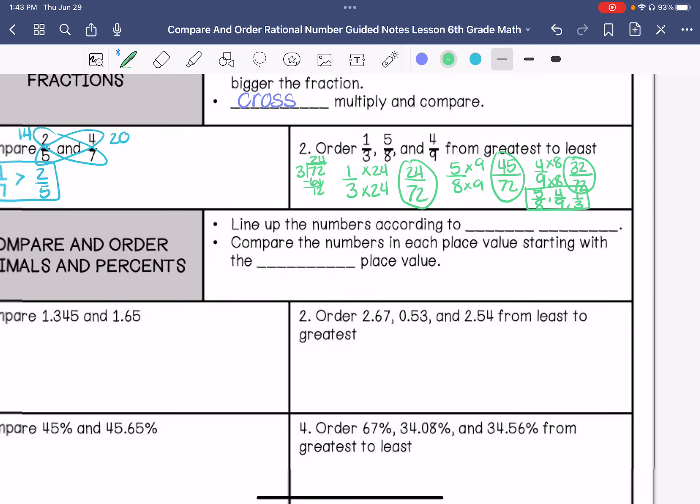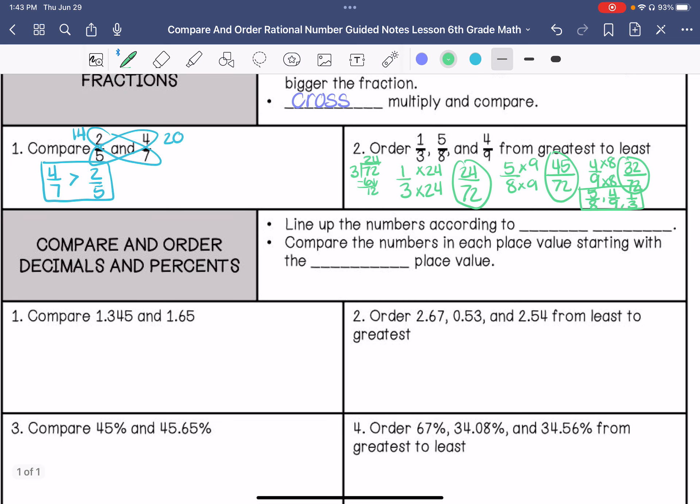If I'm comparing decimals and percent, they have to be in the same form for you to compare them. You're going to line them up according to place value. You're going to compare the numbers in each place value starting with the largest place value.